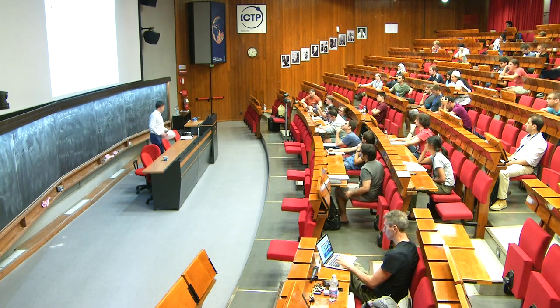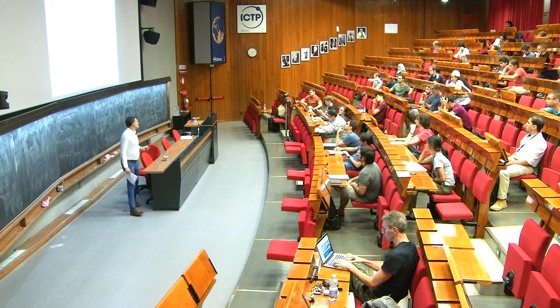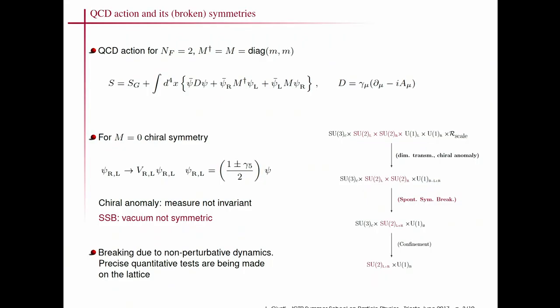We now pass to the second topic of this lecture: spontaneous symmetry breaking. We will see how to study on the lattice the spontaneous symmetry breaking of QCD — the mechanism that gives mass to the pions.